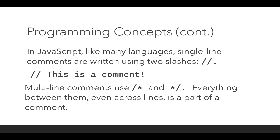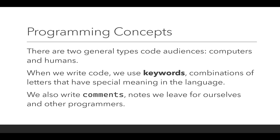In JavaScript, we can create a single-line comment using two slashes, and the comment extends to the end of that line. We can also create multi-line comments using slash-asterisk and then asterisk-slash. Finally, there are two general types of code audiences: computers and humans. When we write code, we use keywords; when we write comments, we're leaving notes for ourselves and other programmers.